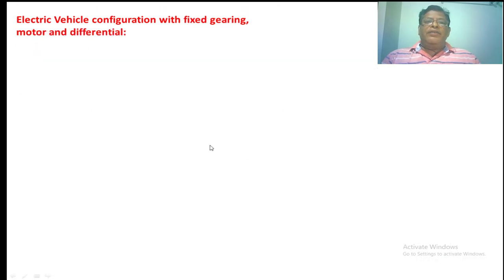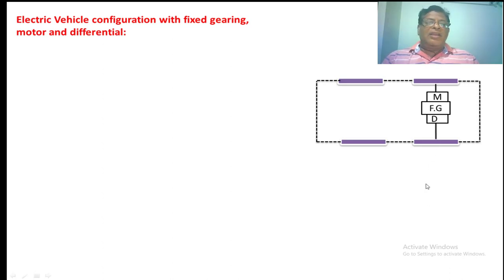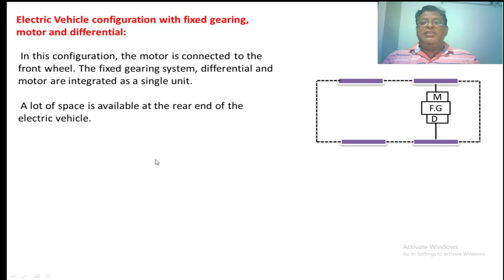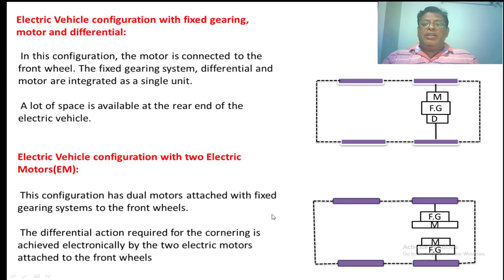The third configuration is the electric vehicle with a fixed gearing motor and differential. In this configuration, the motor, fixed gearing, and differential are a single unit placed on the front axle of the electric vehicle, leaving a lot of space available at the rear end. The differential is also removed because each front wheel is controlled by the motor along with a fixed gear system, so there is no need for a differential.